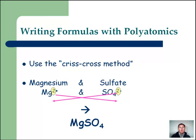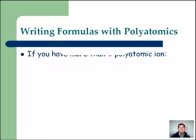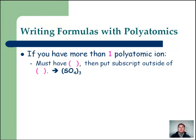Here is the one catch: if you have more than one polyatomic ion — meaning when you're doing your crisscross and you're dropping a number of two, three, or four down to the polyatomic — you must put the polyatomic in parentheses and then put the subscript outside those parentheses. For example with aluminum, which has a plus three charge, we bring the three down and put it outside the parentheses.